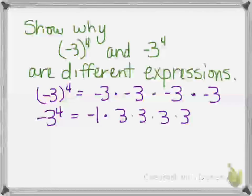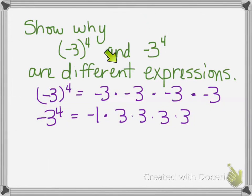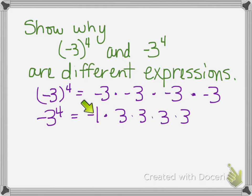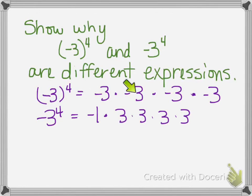But the other expression, negative three to the fourth without parentheses, leads to something different. In this case, the exponent is only applied to the number directly next to it, so it's positive three that we're multiplying four times. The negative sign out front just means take the opposite of it, or multiply by negative one. Those would actually be different values in this case. The first expression ends up being positive, because you have pairs of negatives multiplying, giving positive three to the fourth. This one will be negative three to the fourth.